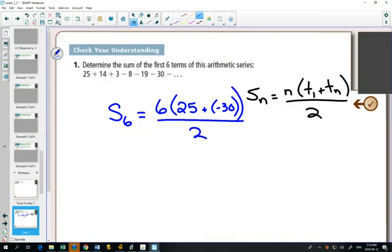And we divide by two. 25 plus negative 30. We'll do this nice and slow. That's negative five. Six times negative five, negative 30. Divide by two, negative 15.